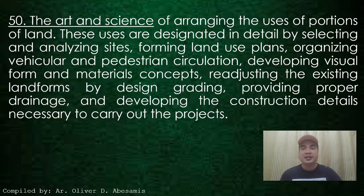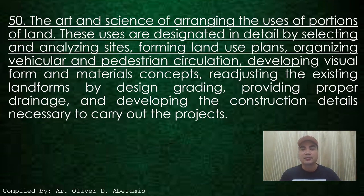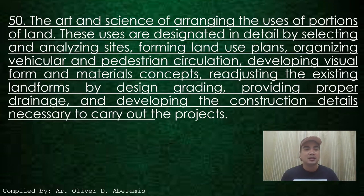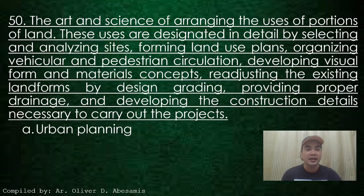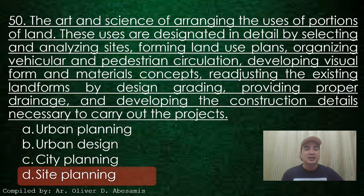Next. The art and science of arranging the uses of a portion of land. These uses are designated in detail by selecting and analyzing sites, forming land use plans, organizing vehicular and pedestrian circulation, developing visual form and materials concept, re-adjusting the existing land forms by design grading, providing proper drainage and developing the construction details necessary to carry out the project. A. Urban planning, B. Urban design, C. City planning, D. Site planning. Answer: D. Site planning.